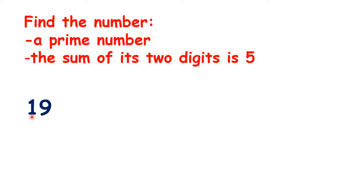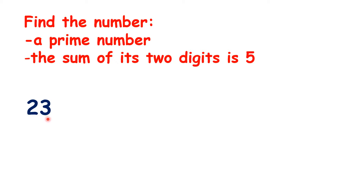With nineteen, its digits total ten. Now twenty-three is a prime number, and two plus three is five, so we have our answer.